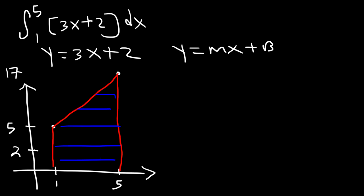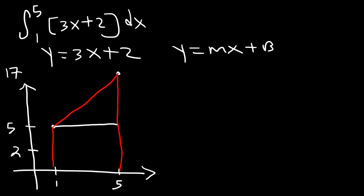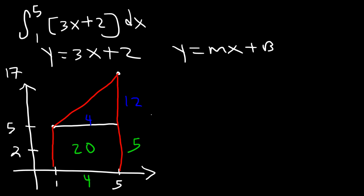We need to find the area of the shaded region. When you see a composite shape like this, you need to break it down into its fundamental shapes — a rectangle and a triangle. For the rectangle, the width is 5 minus 1 which is 4, and the height is 5 units, so the area is 4 times 5 which is 20. For the triangle, it has a base of 4 and a height of 17 minus 5 which is 12. One half times 4 times 12 gives us 24. Adding these two values: 20 plus 24 equals 44.